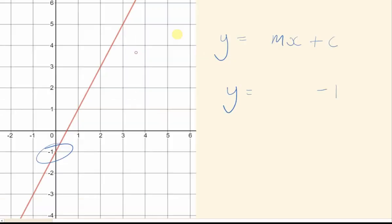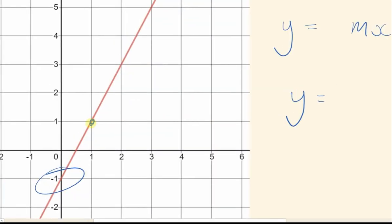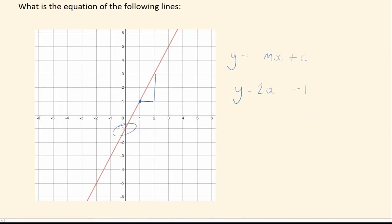Next will be the gradient. We can start the gradient from wherever. So look at this point here. If I go 1 square across, I can see I go 2 squares up. Therefore, the gradient is 2. So y equals 2x minus 1.